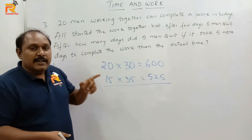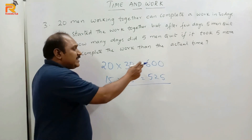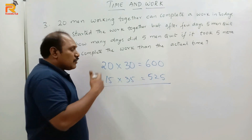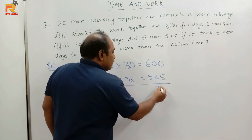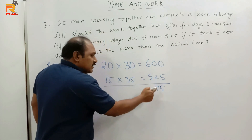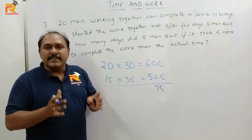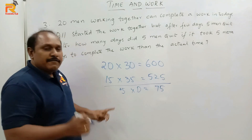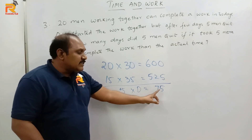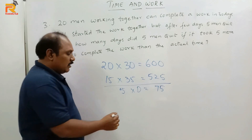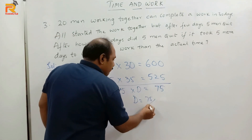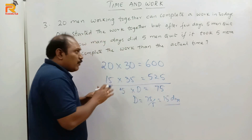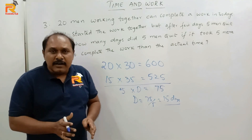In the question it is given that in 35 days the work is completed, meaning all 600 chocolates are consumed. But these 15 men have eaten only 525 chocolates. So who ate the other 75 chocolates? That is 600 minus 525 = 75. Definitely these 75 chocolates were eaten by the 5 men who left in between. 5 men in one day eat 5 chocolates. To eat 75 chocolates, how many days did they work? 75 divided by 5 is 15 days. So the 5 men who quit worked for 15 days.